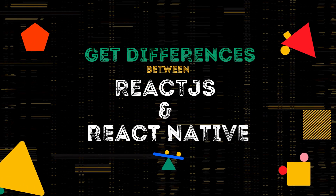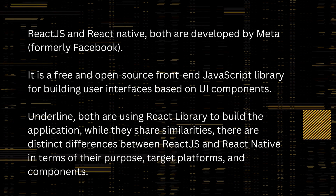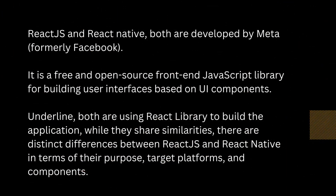React.js and React Native, both are developed by Meta, formerly known as Facebook. It is a free and open-source front-end JavaScript library for building user interfaces based on UI components. Both are using the React library to build the application. While they share similarities, there are distinct differences between React.js and React Native in terms of their purpose, target platforms, and components.